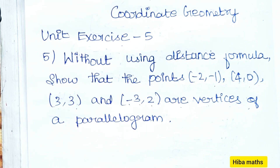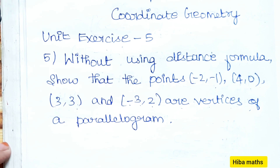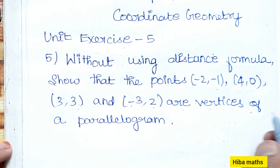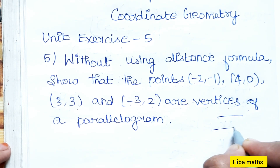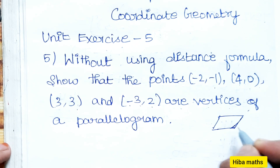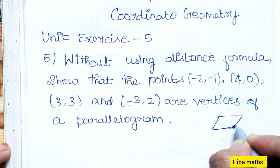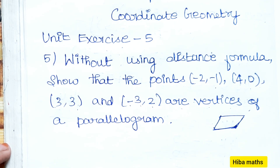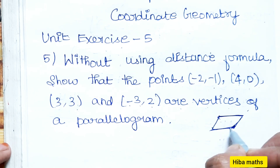These 4 points form a parallelogram. Since we cannot use the distance formula, we use the slope method. The property of a parallelogram is that opposite sides are parallel. So we will check the slope of the line segments.